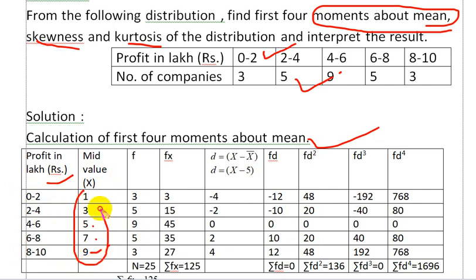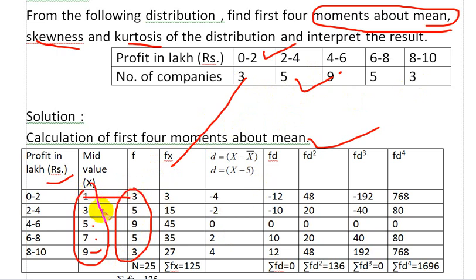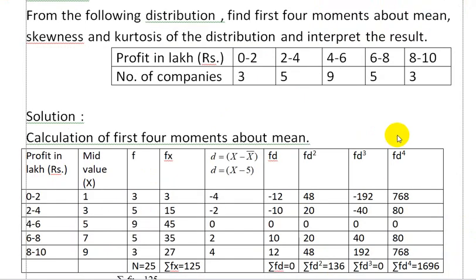The frequency values are 3, 5, 9, 5, 3. Now when we consider that the total N is 25, we can calculate the mean value, and then we have a reference point to proceed.